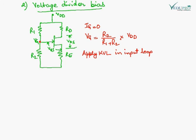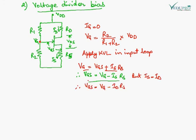We apply KVL in the input loop. Applying KVL in the input loop, we get VG equals VGS plus IS RS. Therefore, VGS is VG minus IS RS, which is the drop in RS. But we know that IS is approximately equal to ID. So we can write VGS equals VG minus ID RS.